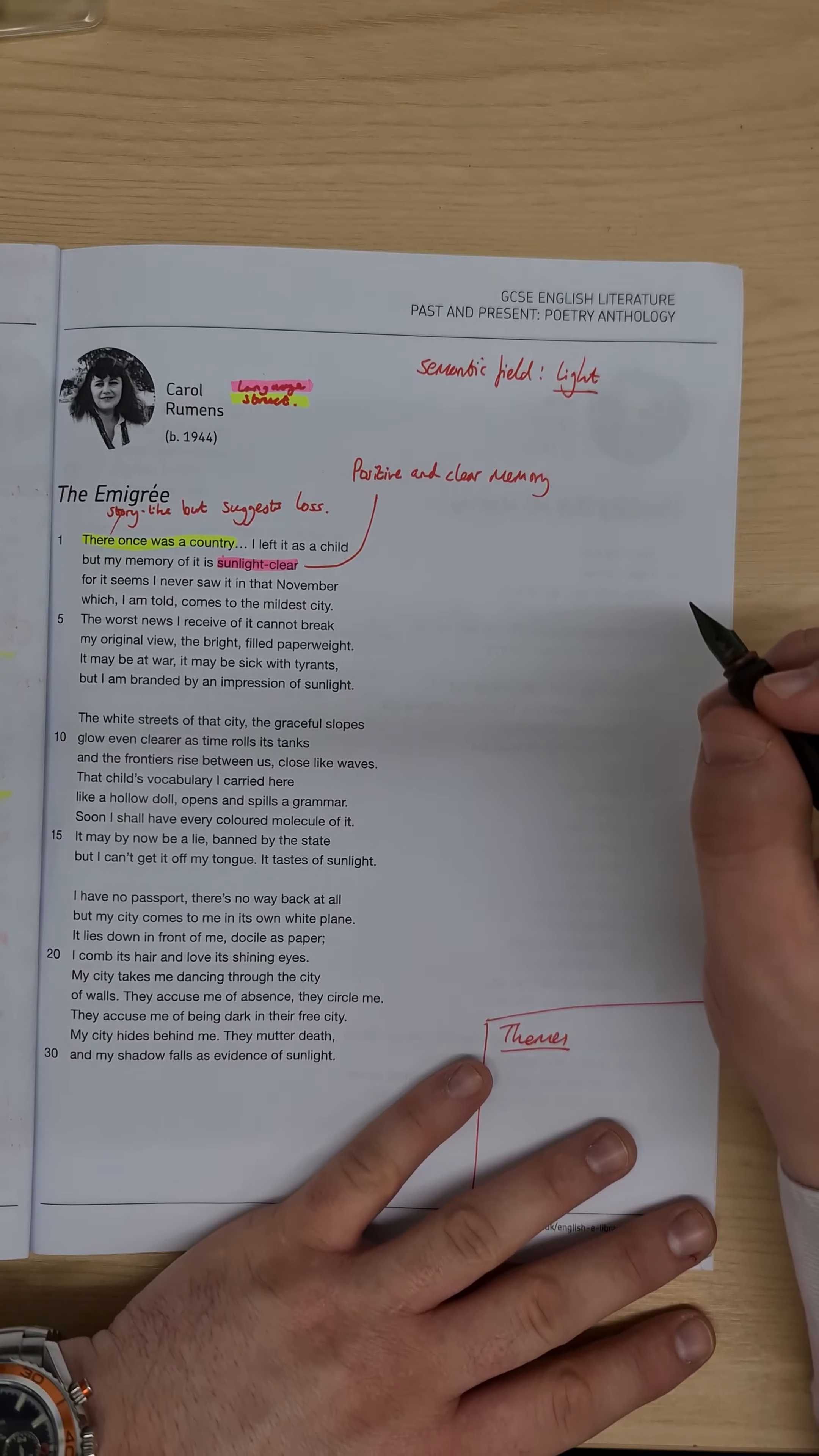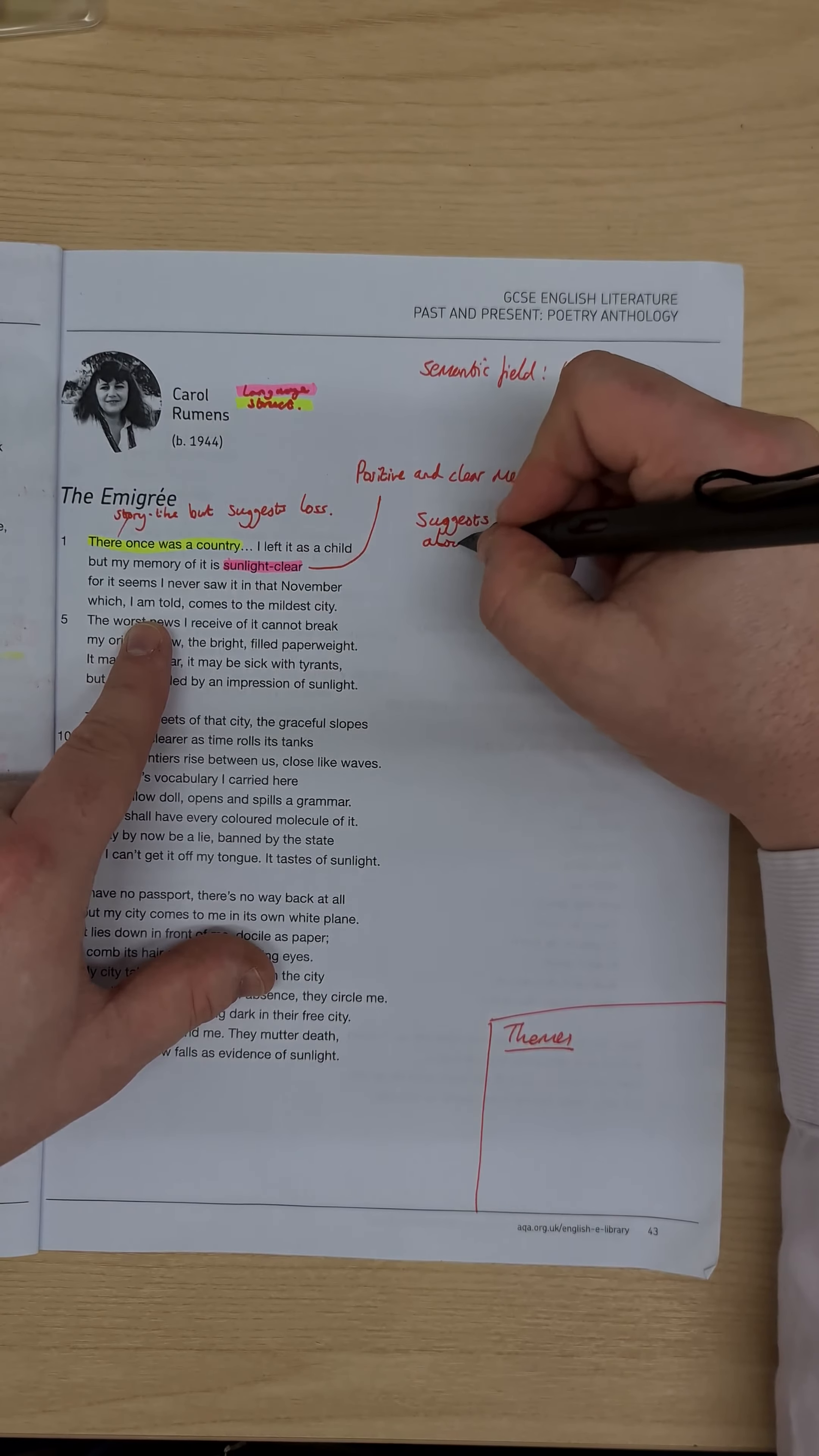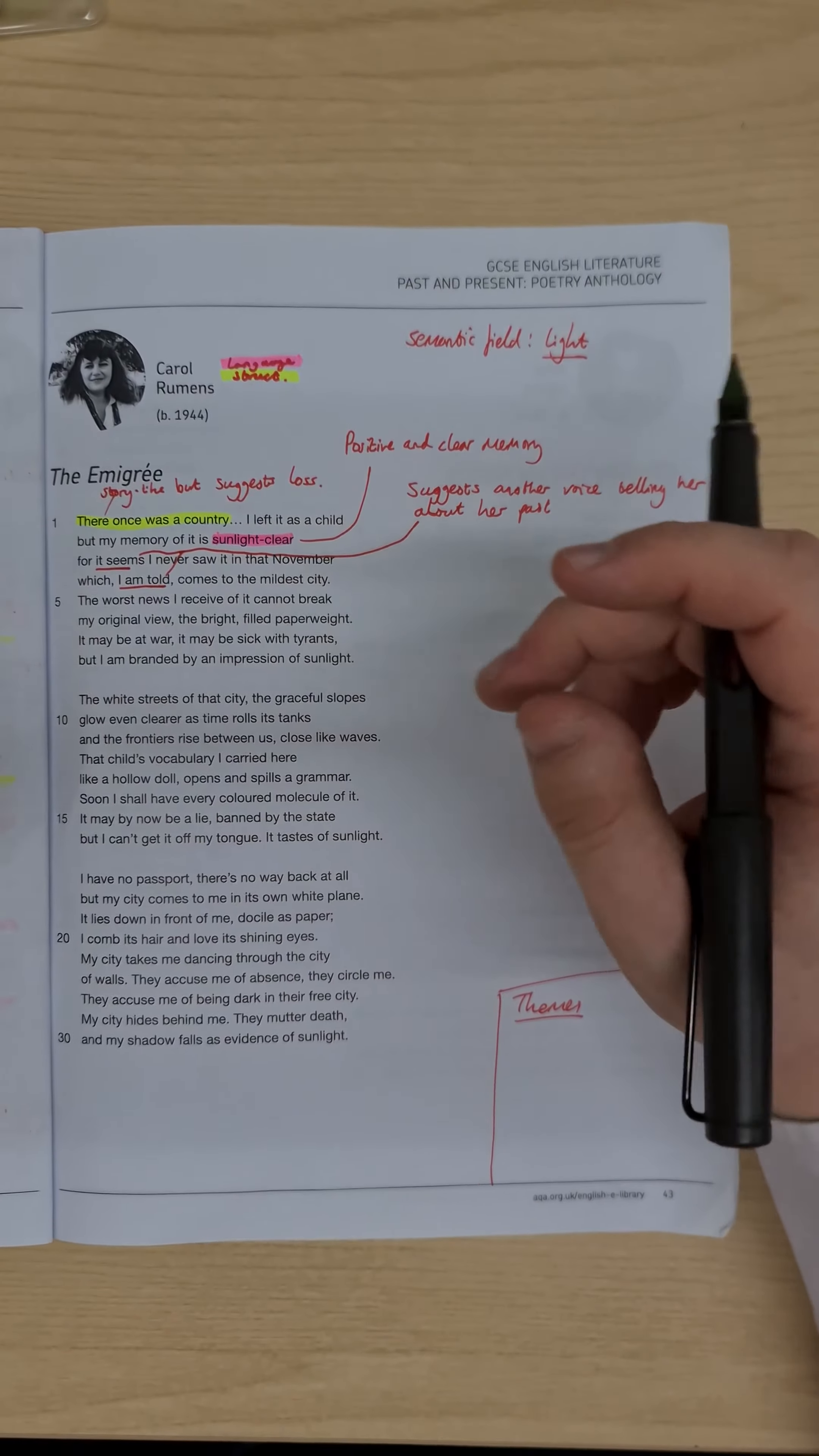Looking down onto the line three, for it seems, I never saw that in November, and it seems, and then I am told. So we've got the two things here. It seems, I am told, that suggests that there is another voice telling her about her past. And again, this links to this idea of the first person in the form contrasting with this extra voice. And it's a nice contrast for us to see.